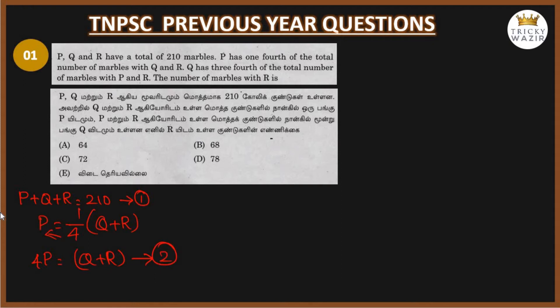From the first equation, Q plus R plus P equals 210. Substituting Q plus R, we get 4P plus P equals 210. So 5P equals 210. 210 divided by 5 equals 42. P value is 42.